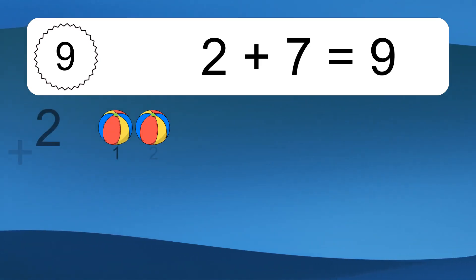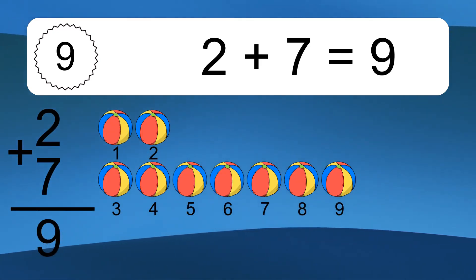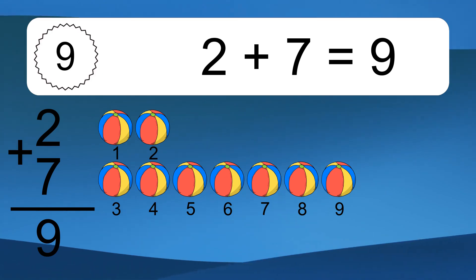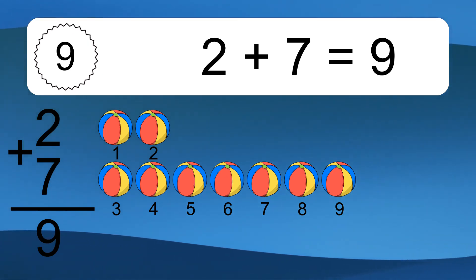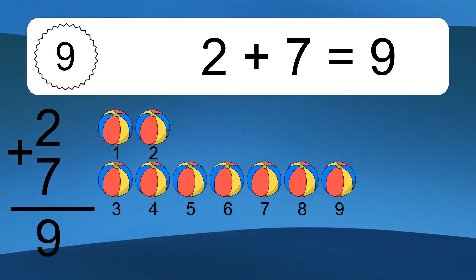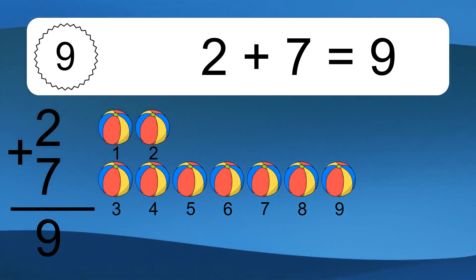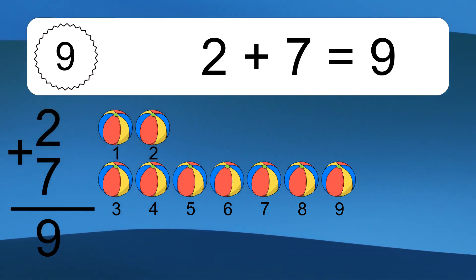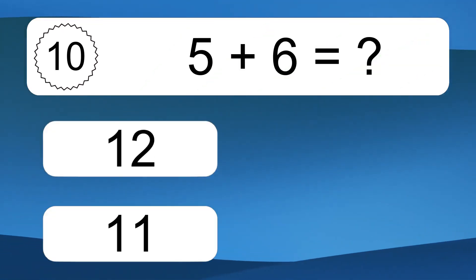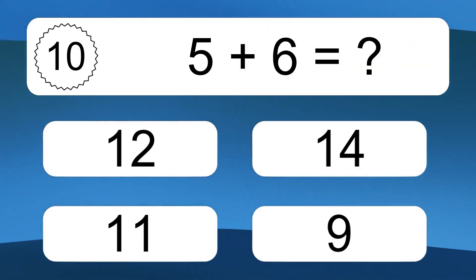2 plus 7 equals what? 2 plus 7 equals 9. Let's count it. 1, 2, 3, 4, 5, 6, 7, 8, 9.